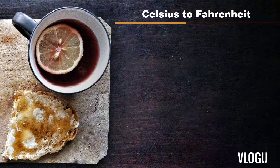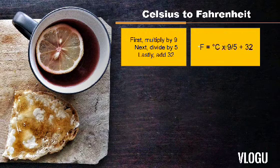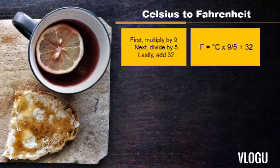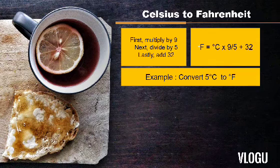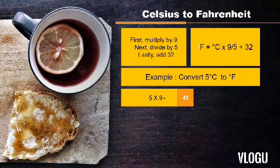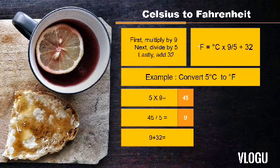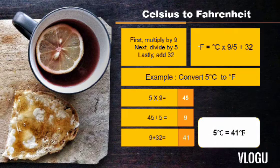How about converting Celsius to Fahrenheit? The formula is: degree Fahrenheit equals degree Celsius times 9, divided by 5, plus 32. Example: convert 5°C to Fahrenheit. Take the given value 5, multiply 5 times 9 which equals 45. Then 45 divided by 5 equals 9. Then 9 plus 32 equals 41. So 5 degrees Celsius is equal to 41 degrees Fahrenheit.